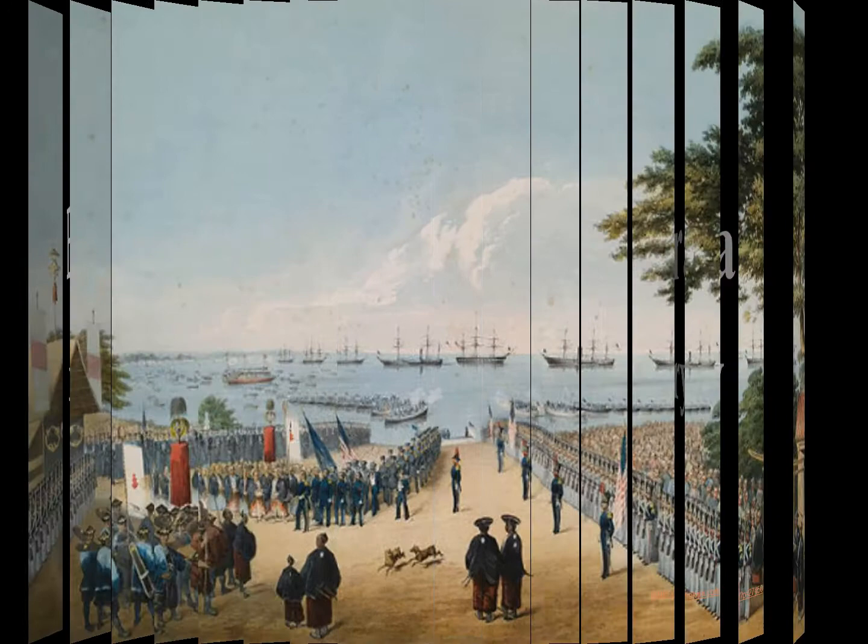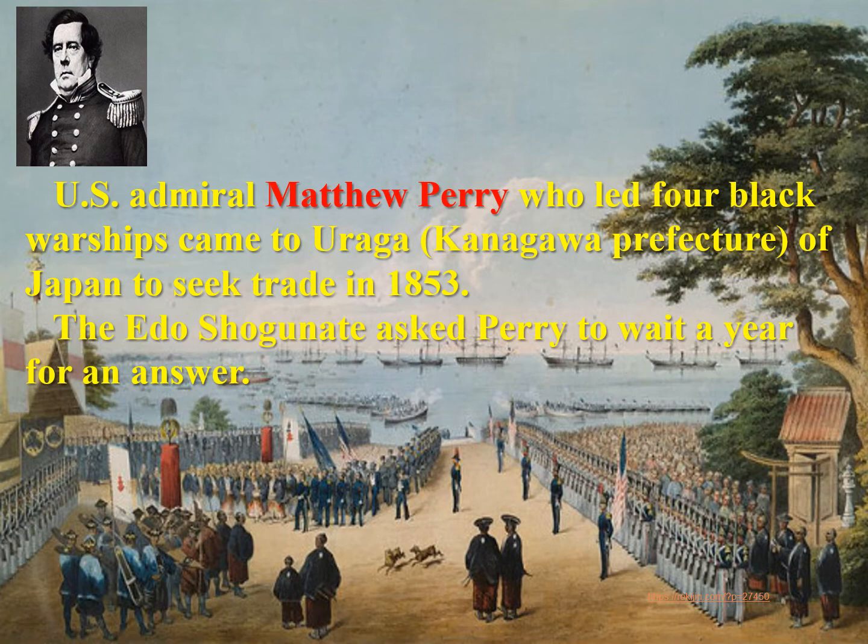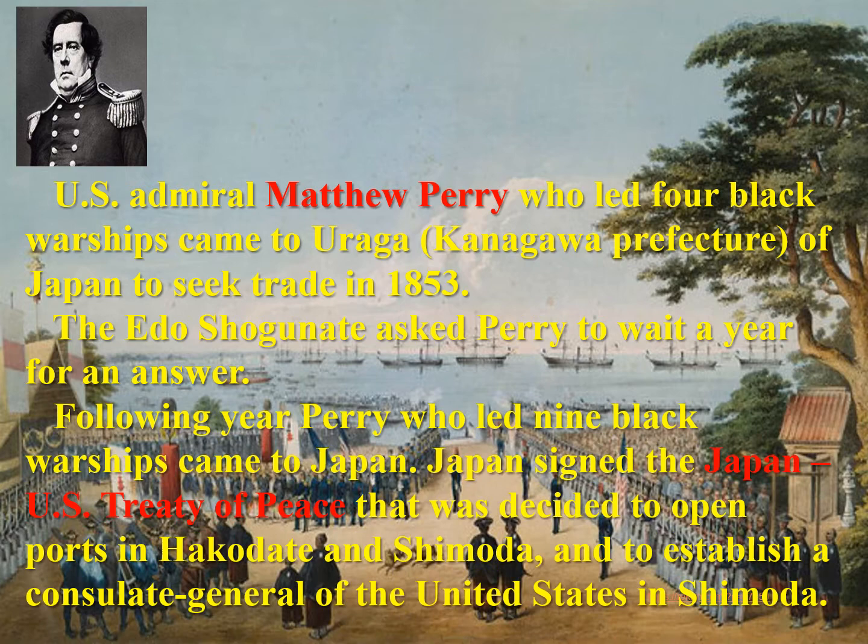U.S. Admiral Marshall Perry, who led four black warships, came to Laga of Japan to seek trade in 1853. The Edo shogunate asked Perry to wait a year for an answer.